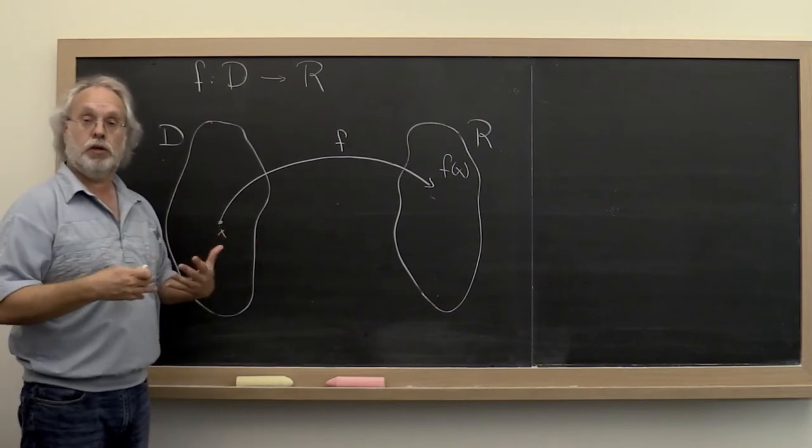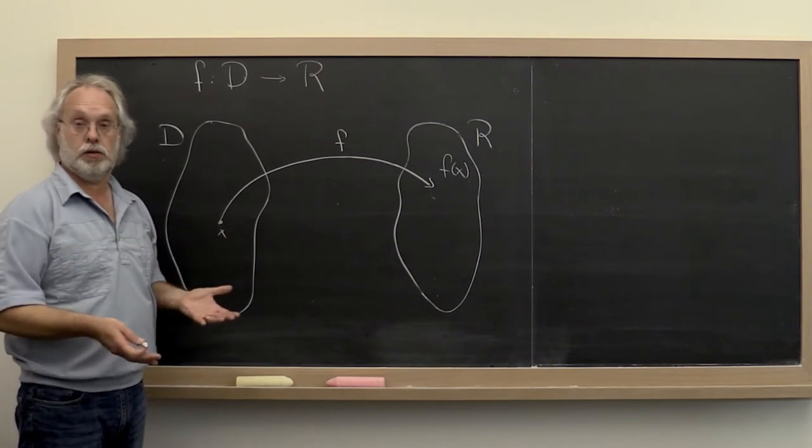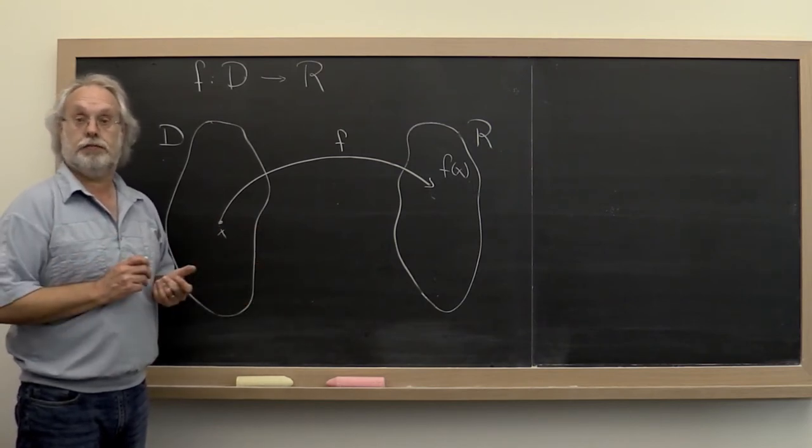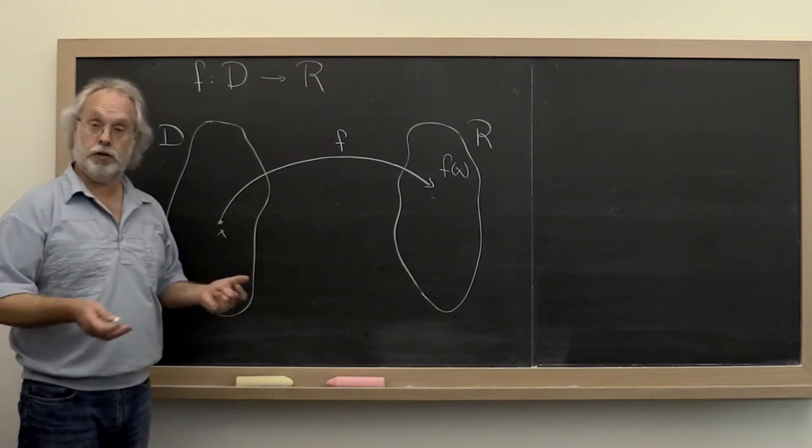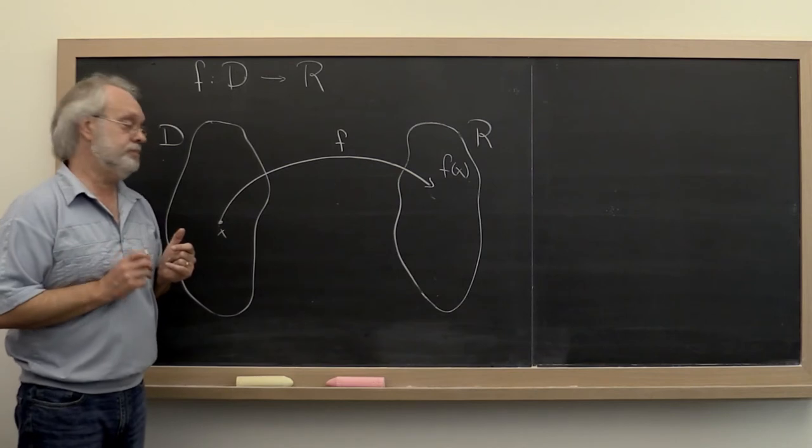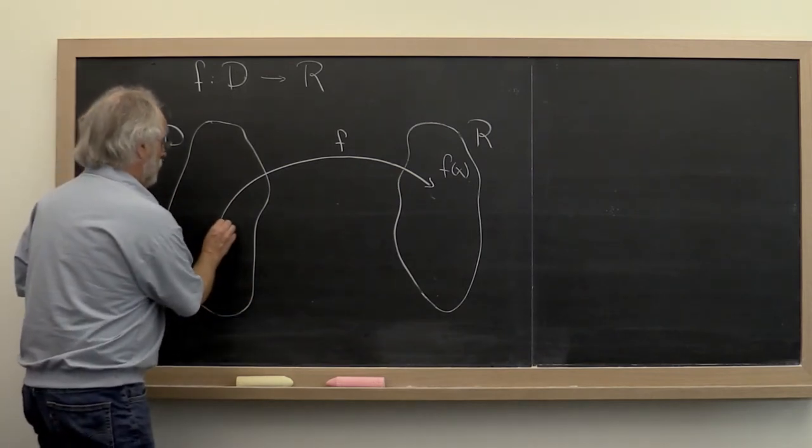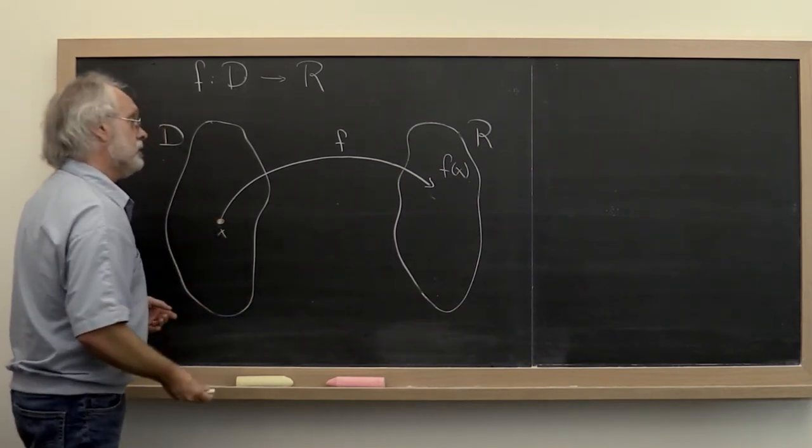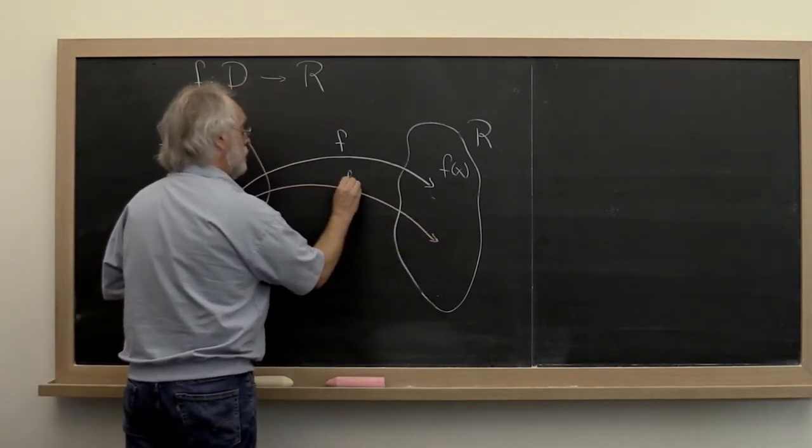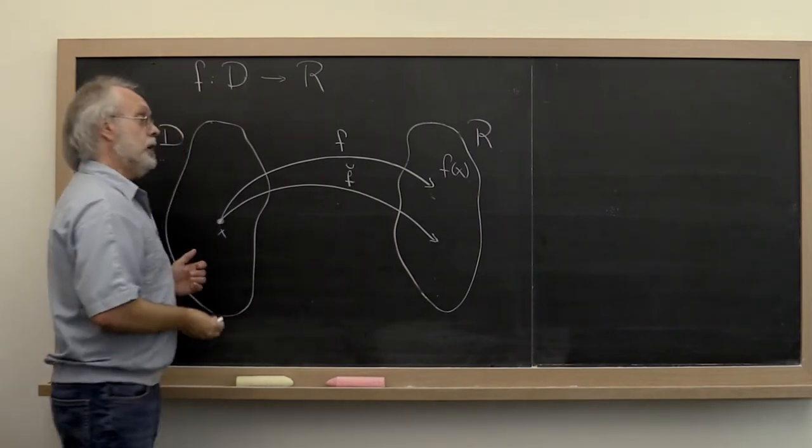But we know that when we implement an algorithm on a computer, you may not end up implementing the exact function. Roundoff error could occur or you might even introduce a bug. So your implementation will take the same value x and will map it to some other value using your implementation, an alternative function f tilde.